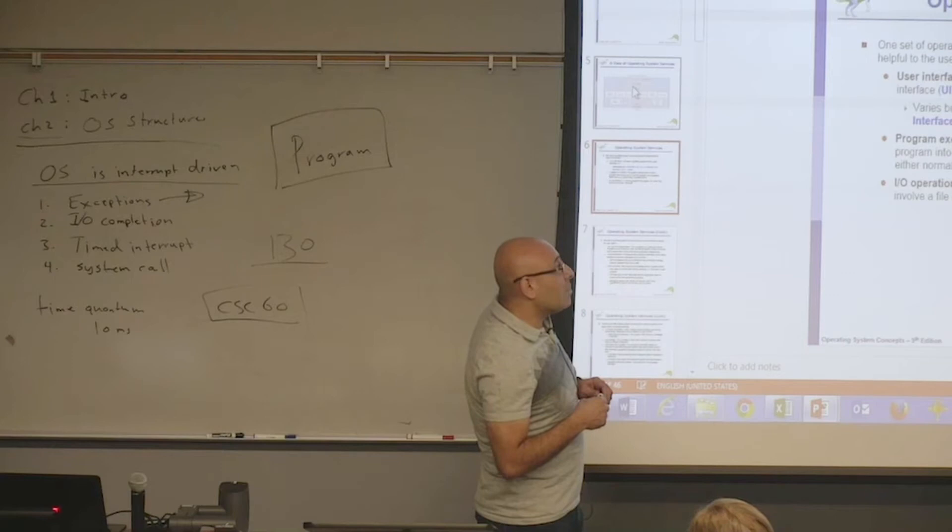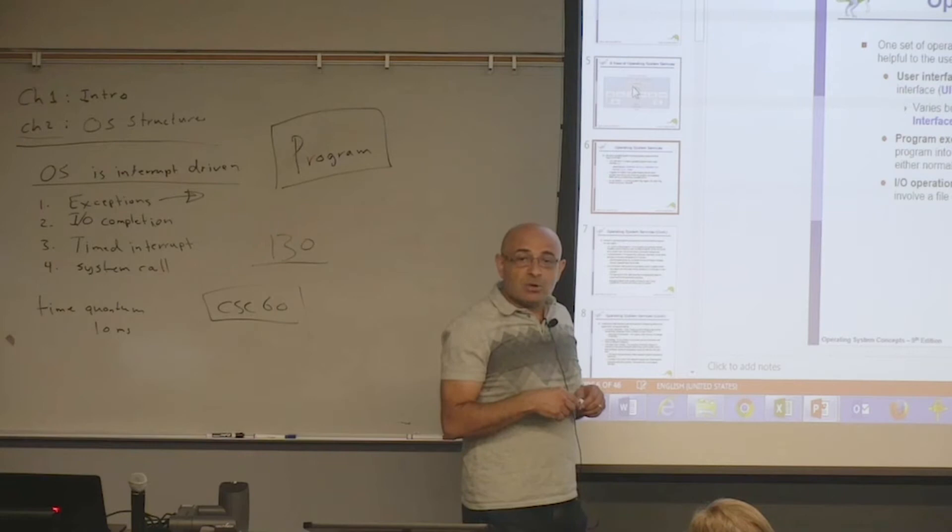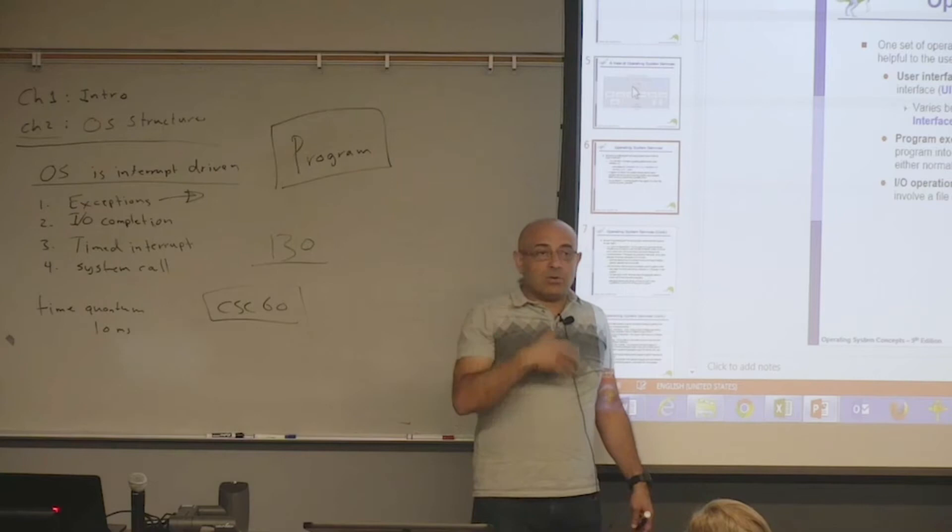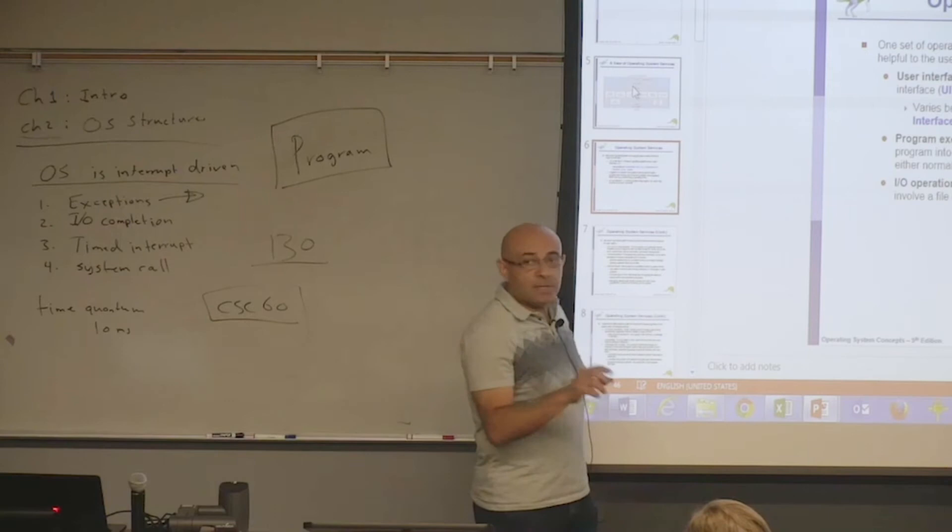Program execution is one of the main functionalities of an operating system. When you click on an icon for a certain application, you are basically asking the operating system to execute that program. Or, on the command line, you just type that program name and hit enter. By typing that program name and hitting enter, you are asking the operating system to execute that program.